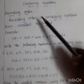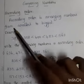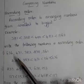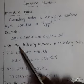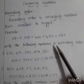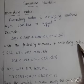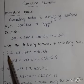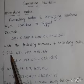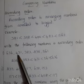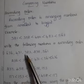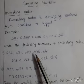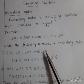Ascending order is arranging numbers from smallest to biggest. Write the following numbers in ascending order. Ascending order means eruvarse. 636, 431, 383, 238, 561.